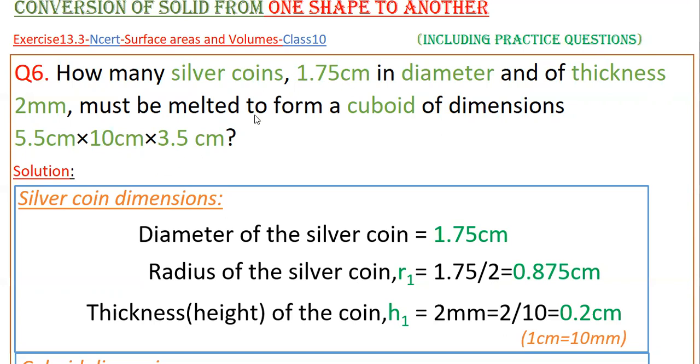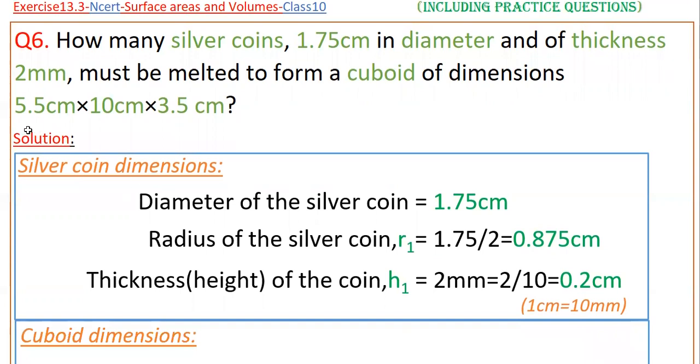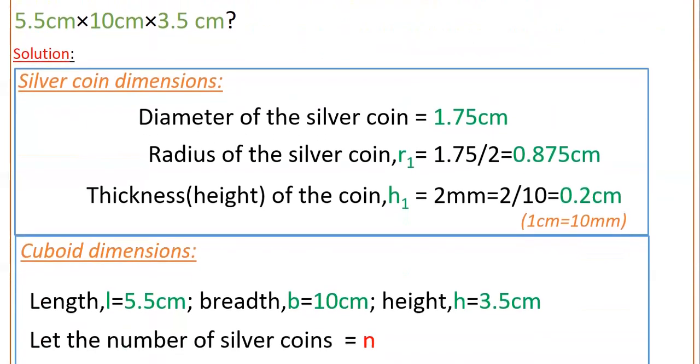All the dimensions are in centimeters, so you have to convert mm into centimeters. 1 centimeter equals 10 mm, so 2 by 10 equals 0.2 centimeters. The cuboid dimensions are: length is 5.5, breadth is 10 centimeters, and height is 3.5 centimeters.